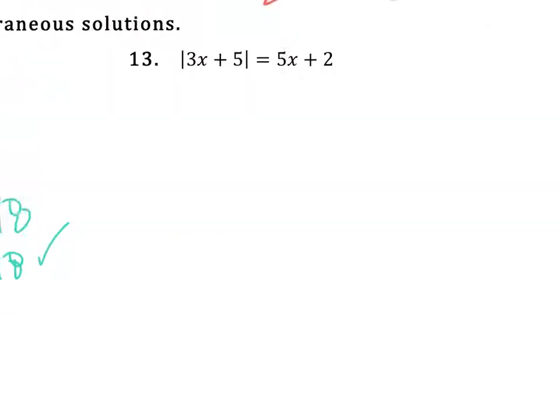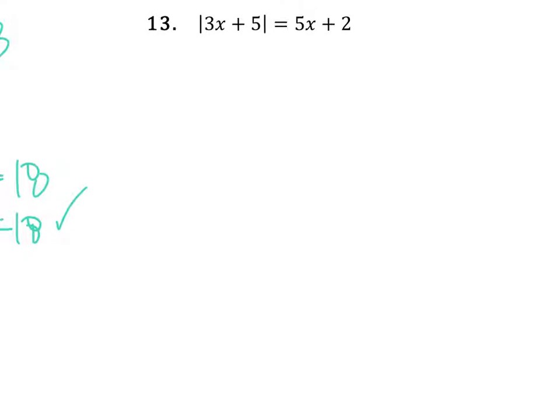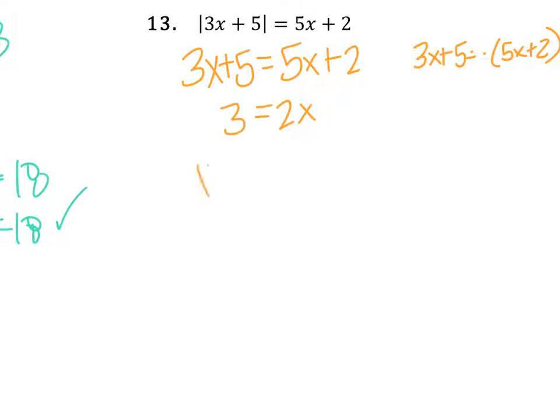Number 13. A little different because I got x's on both sides. But same idea. The absolute value bars are isolated. So I just say 3x + 5 equals 5x + 2. Then I say 3x + 5, and then make sure that whole side is negative, 5x + 2. Solve these equations. So I would minus 3x on both sides, minus 2 on both sides. I'd get 2x equals 3. Divide by 2, x equals 3 halves.